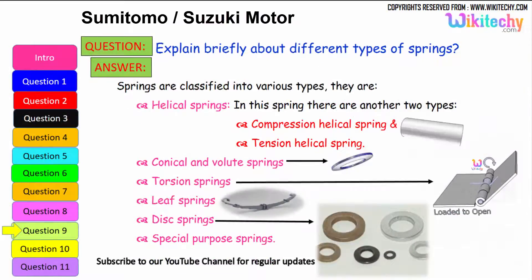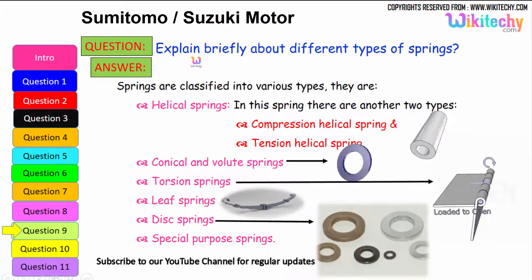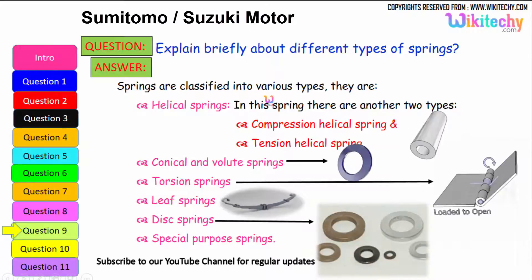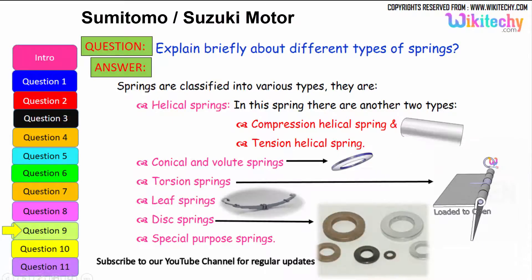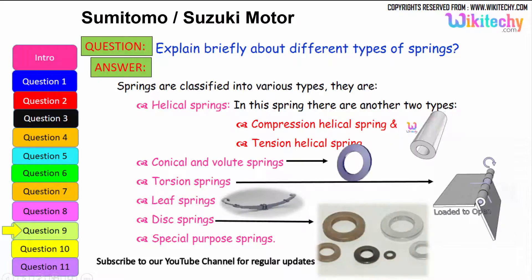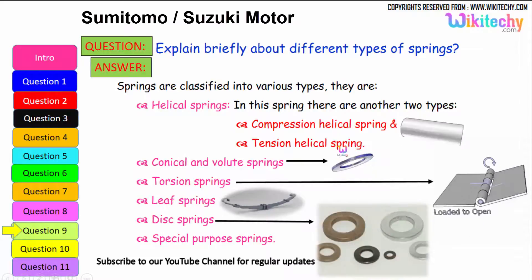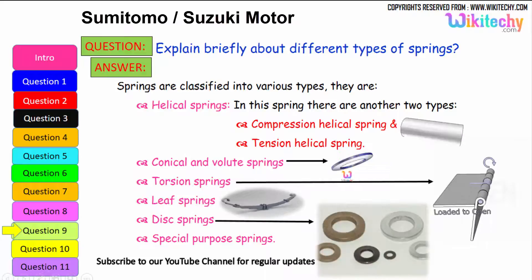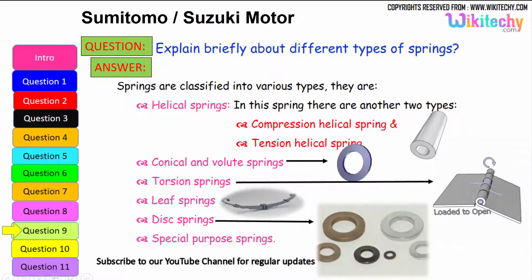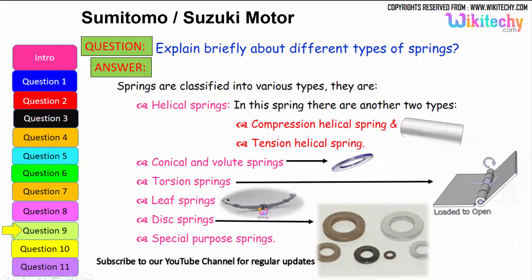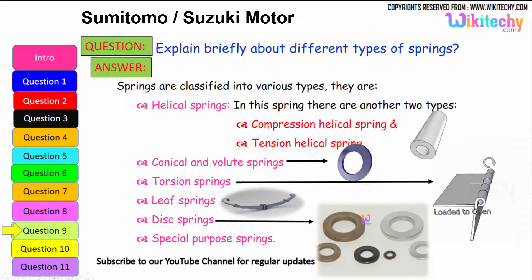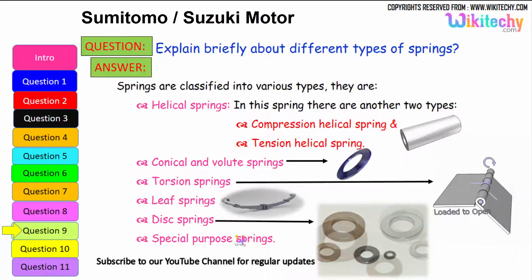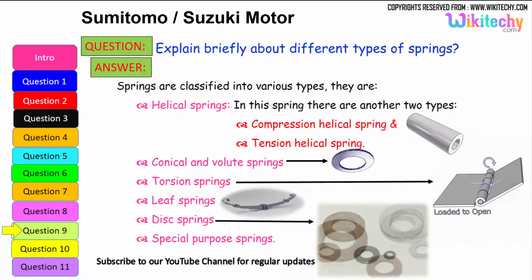Now let us see briefly the different types of springs. Springs are classified into various types. The first one is helical springs, which are further divided into compression helical springs and tension helical springs. Next are conical volume springs, torsion springs, leaf springs, and disc springs. There are also additional springs called special-purpose springs. These are the different types of springs available.